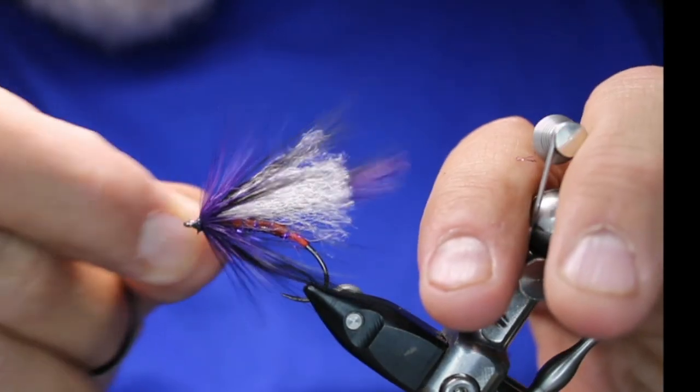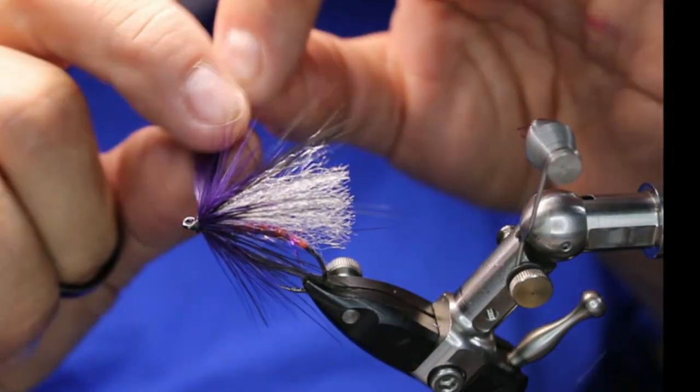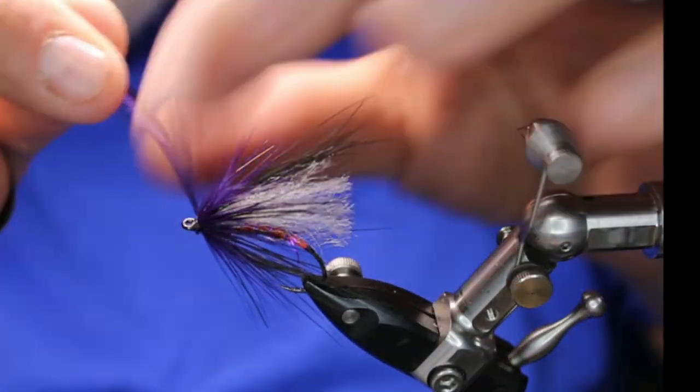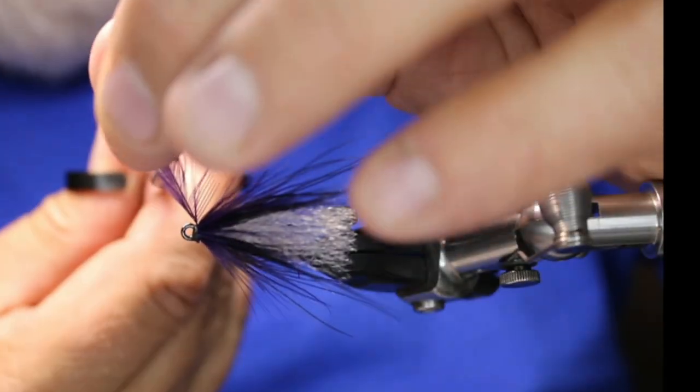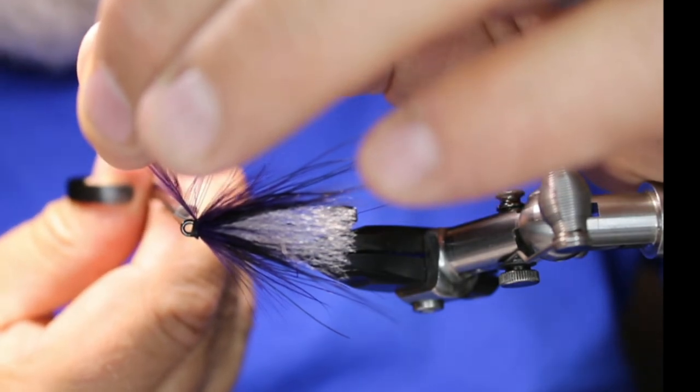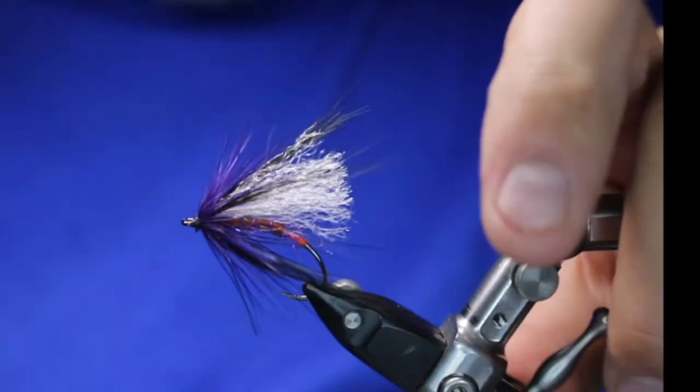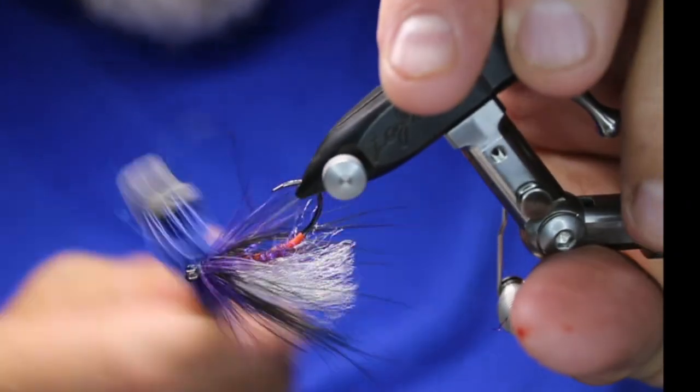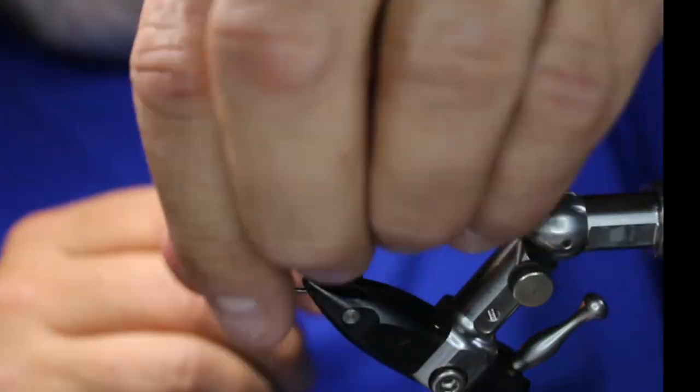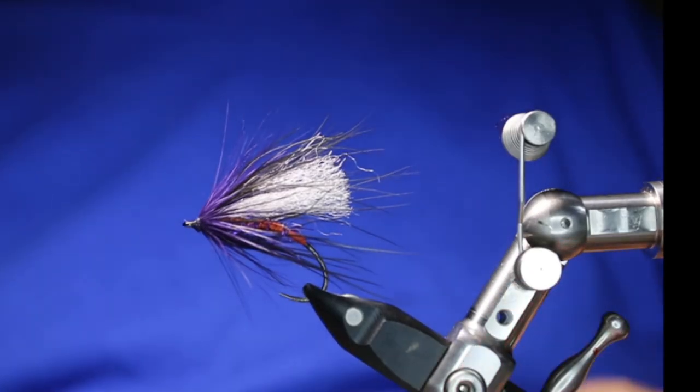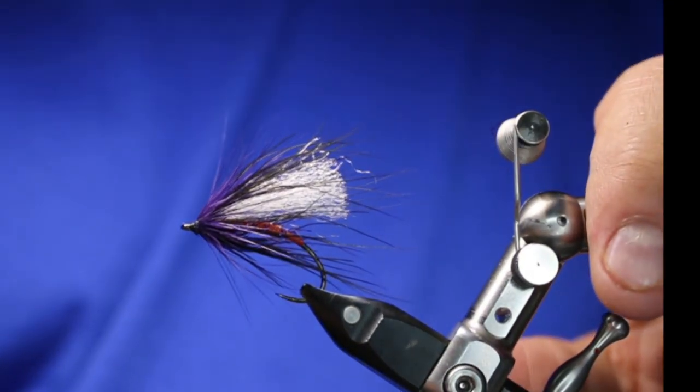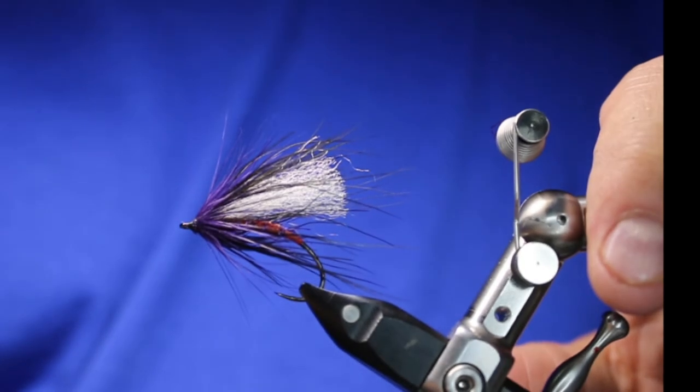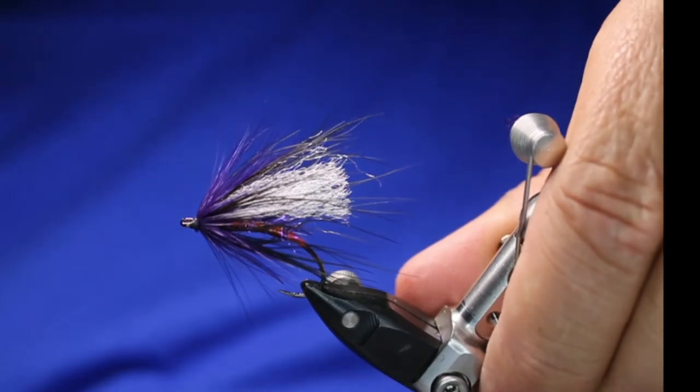Get rid of that little piece that's in there. Get your feather, nip that off. Just take a brush, just brush that, just to make sure they're all separated. And there's the finished product, there's the finished fly. So that is it.